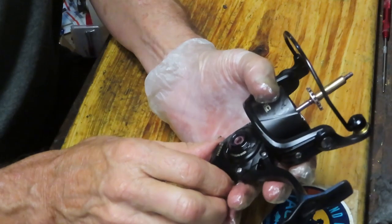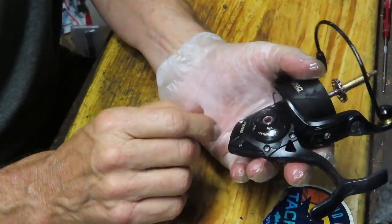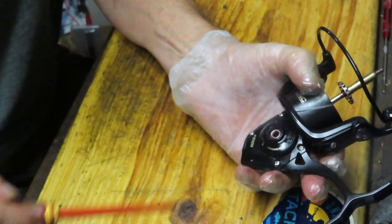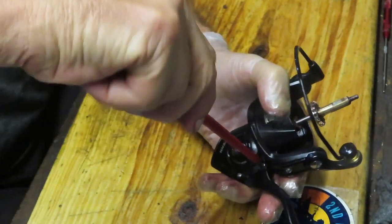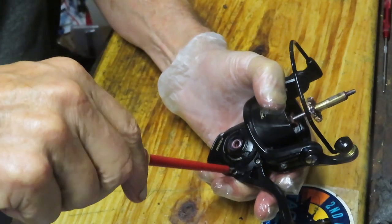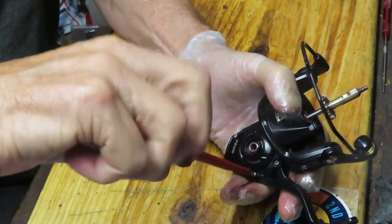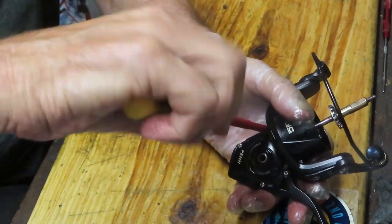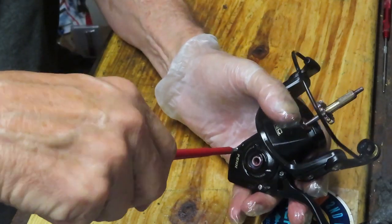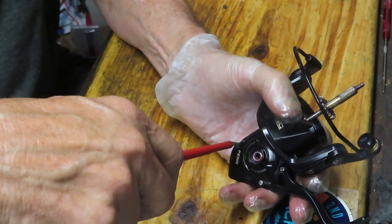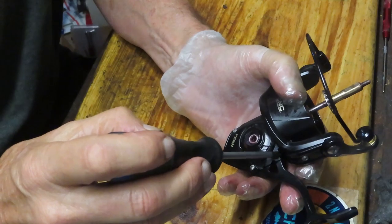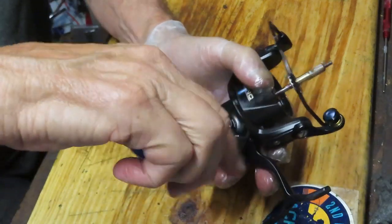I'm not sure if somebody's had this reel apart. This looks like it has the quantum grease in it, not the Penn grease. So it's likely or it's possible that this reel has been serviced, and maybe something has gone amiss with the servicing. You never know. When something comes in the shop, you don't know the whole story. Sometimes you get little bits and pieces of it.